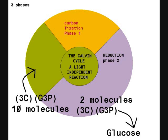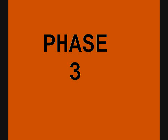Of the 12 molecules of glyceraldehyde 3-phosphate, 2 molecules leave the Calvin Cycle to become glucose and other sugars. The other 10 molecules of glyceraldehyde 3-phosphate go into Phase 3 of the Calvin Cycle.